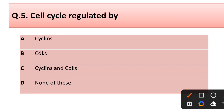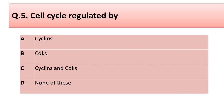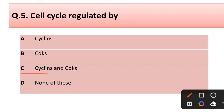Question number five: the cell cycle is regulated by — options: (a) cyclin, (b) CDKs, (c) cyclin and CDKs, (d) none of these. Correct answer is option C: cyclin and CDKs.